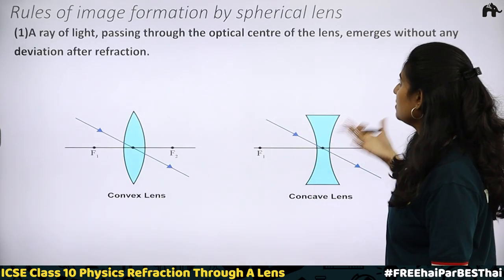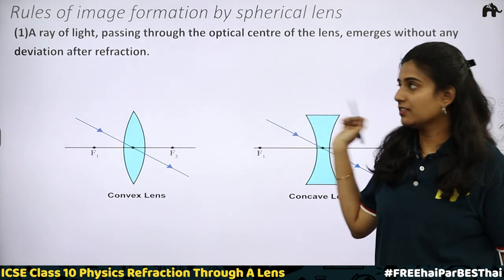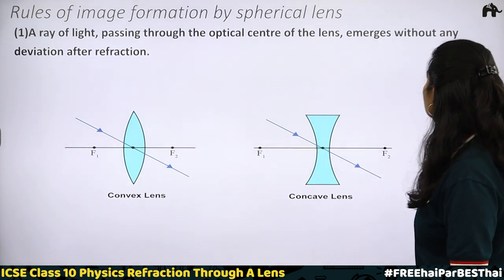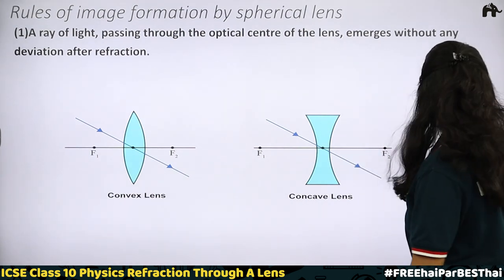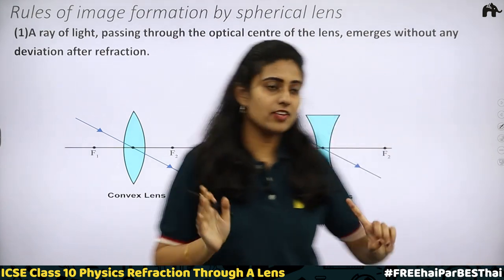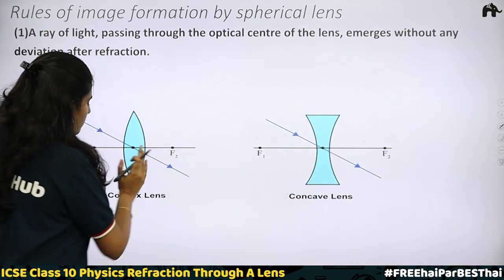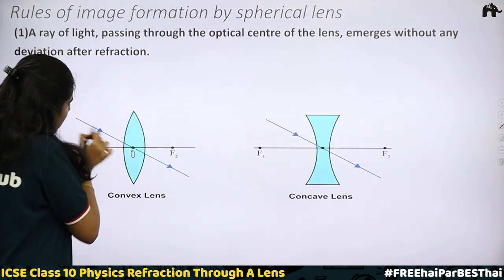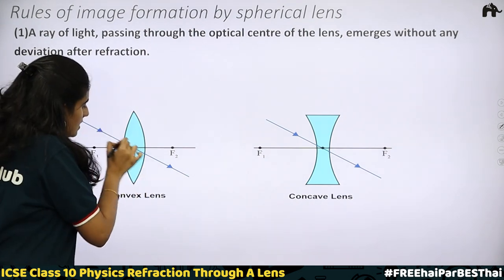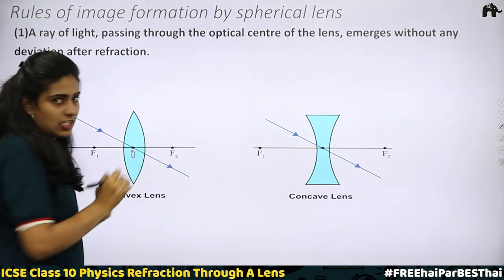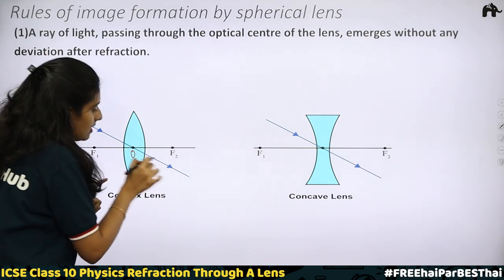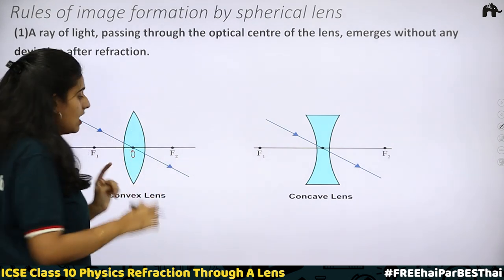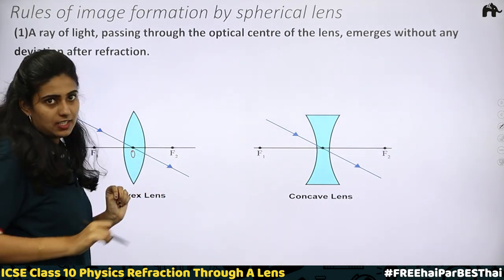Rules of Image Formation by Spherical Lens — we will be studying 3 rules. Here is the first rule: a ray of light passing through the optic centre of the lens emerges without any deviation after refraction. Consider these figures — here we have a convex lens and a concave lens. In this convex lens, we have an optic centre. The incident ray of light will follow undeviated, meaning the refracted ray and the incident ray will be along the same straight line.